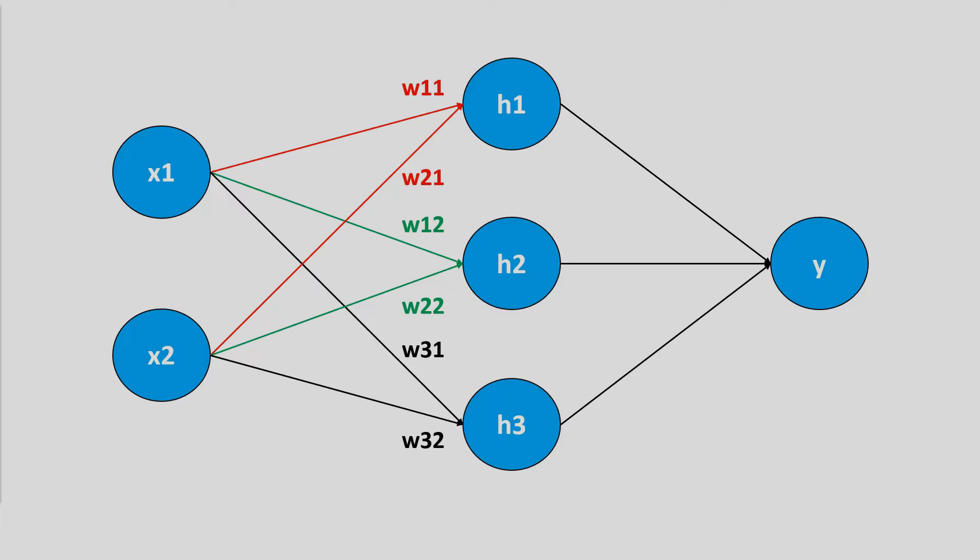So like you can see here, w11 and w21 are connecting x1 and x2 to h1, and the same for h2 and h3. To keep this case still simple, the weights from the hidden layer to our output layer are all set to 1.